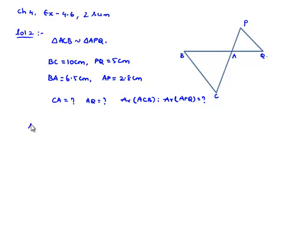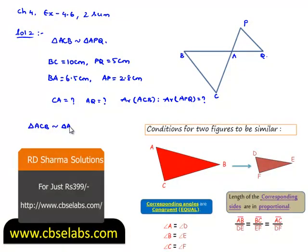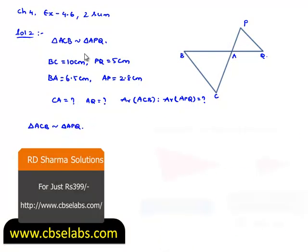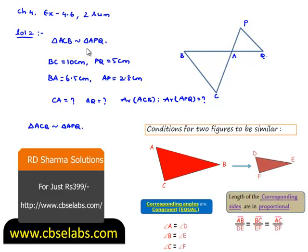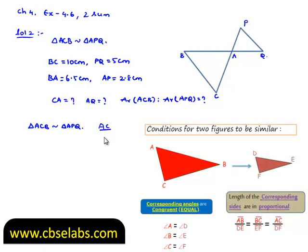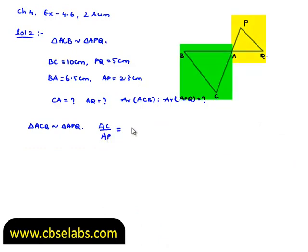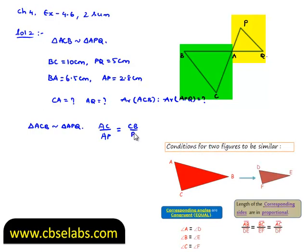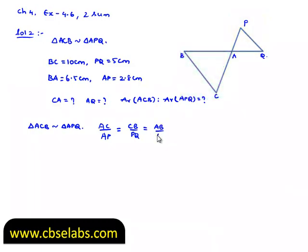Let us consider the given condition that triangle ACB is similar to triangle APQ. We know that when two triangles are similar, then their corresponding sides will be in proportion. Therefore, the corresponding sides AC by AP is equal to CB by PQ that is equal to AB by AQ.